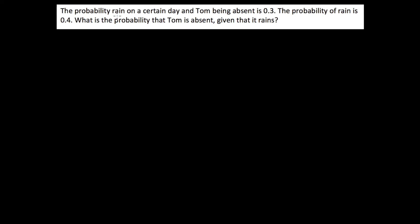So the first one here, it says the probability of rain on a certain day and Tom being absent is 0.3, the probability of rain is 0.4, what is the probability that Tom is absent given that it rains?